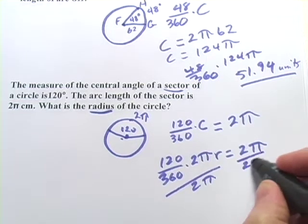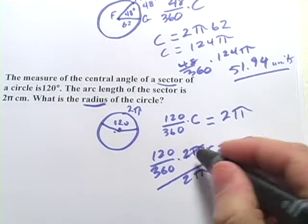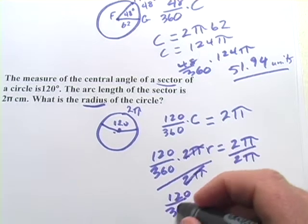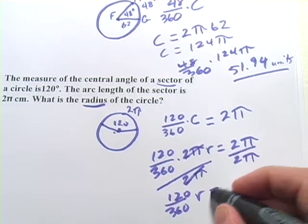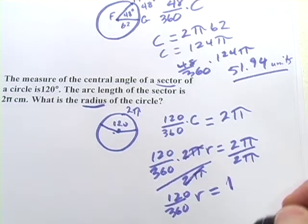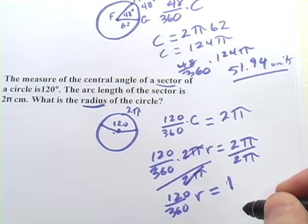I notice I've got 2π on both sides. On this side the 2π's will cancel, leaving me with just 120 over 360 times r. And over here, 2π divided by 2π, well anything divided by itself equals 1. So that's quite a bit simpler already.